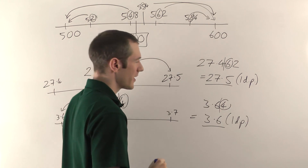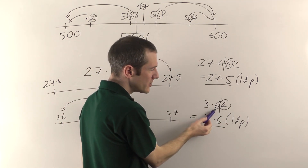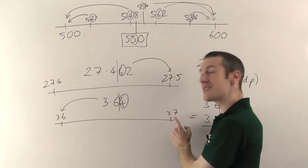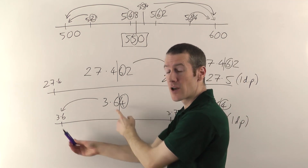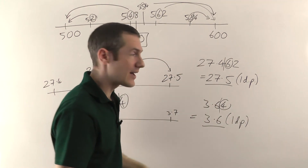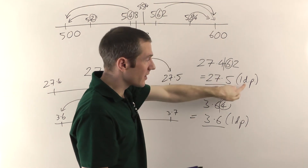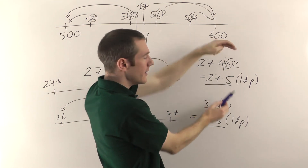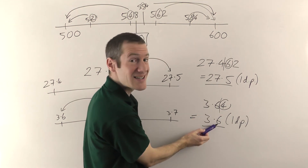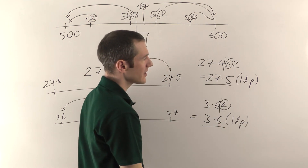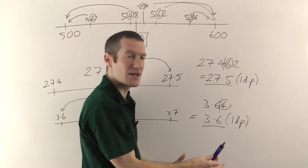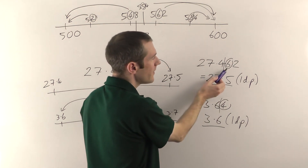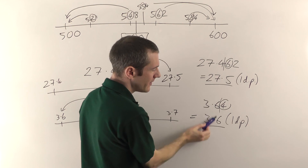One very important thing to point out: this was less than 5, so you've rounded down — but notice the 6 hasn't gone down to a 5. It's rounded down in the sense that this number is closer to 3.6 than to 3.7, but the digit here has actually stayed the same. So remember the rule like this: put your line after the first decimal place, look at the next digit — if it's 5 or more, this number goes up; if it's less than 5, this number actually stays the same. You're throwing away everything after the line.